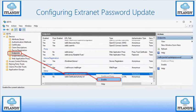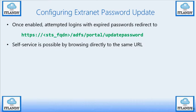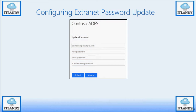You can see the authentication type is set to anonymous, and you can change that as well if you choose to. Once enabled, an attempted logon with an expired password will redirect to the password update page. Self-service is also possible by browsing directly to that URL. Be careful — this is only to update the password, not a password reset like what we do within AD or MFA. It shows fields for old password, new password, confirm, and submit.